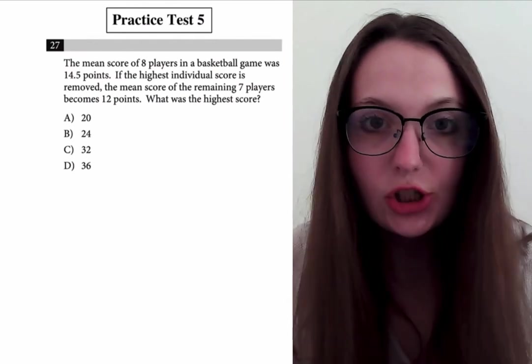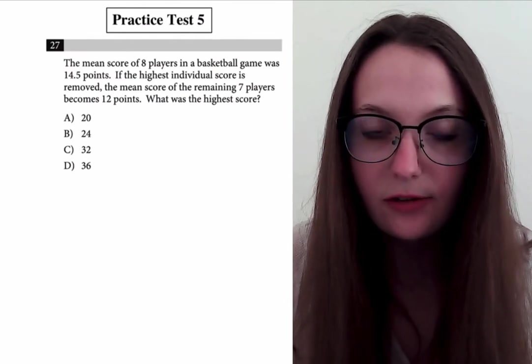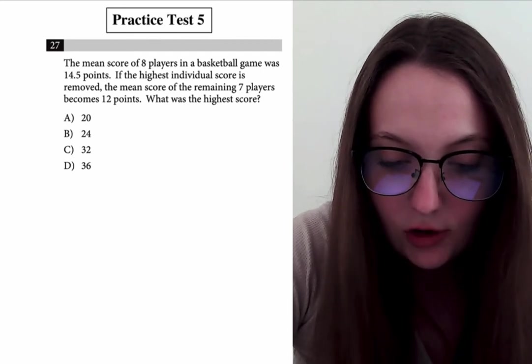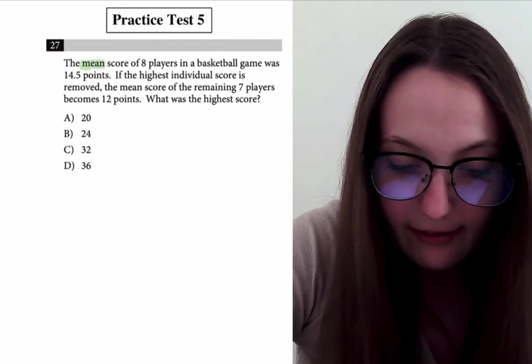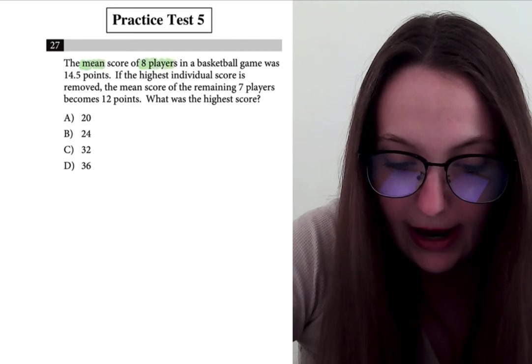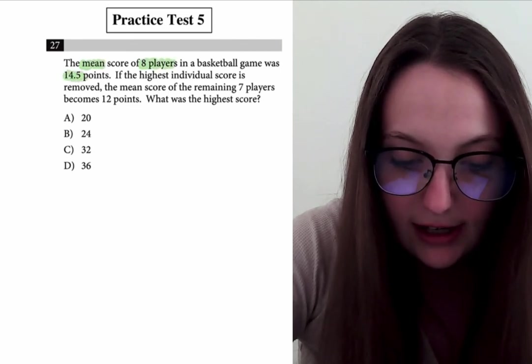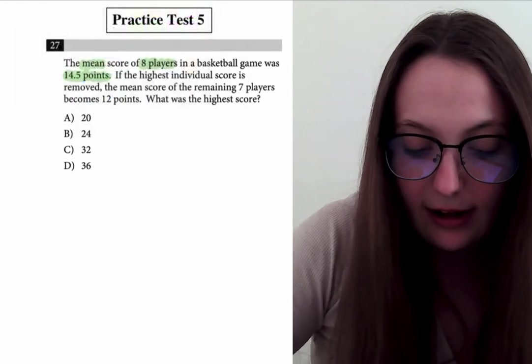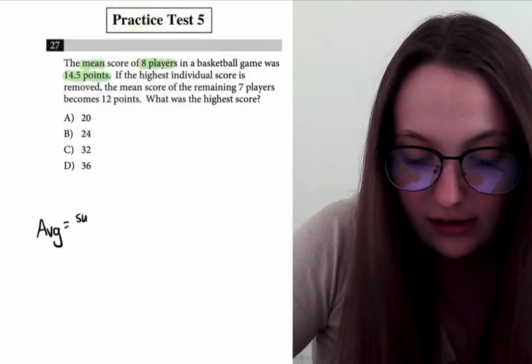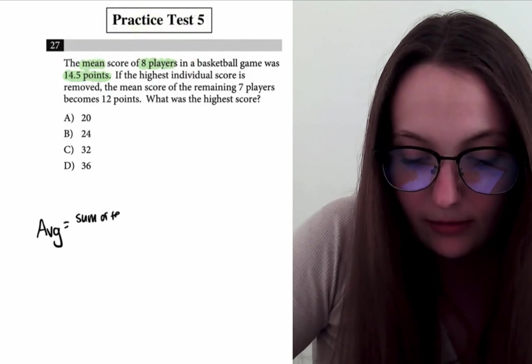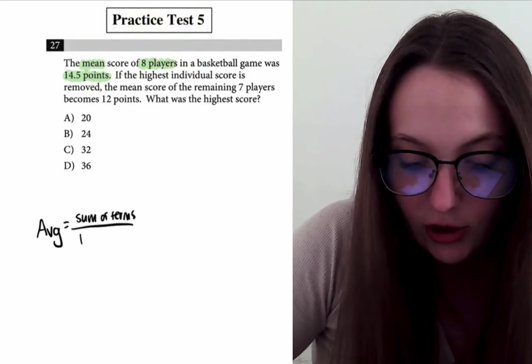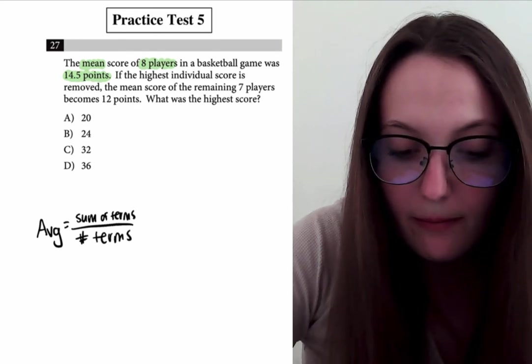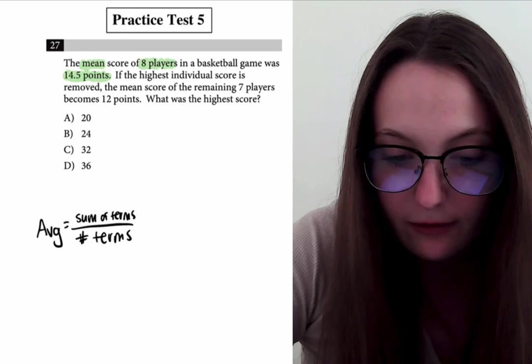So now let's check out question 27 from practice test five. They tell us that the mean score—mean again refers to the average—the average score of eight players in a basketball game was 14.5 points. So we know that the average is equal to the sum of the terms over the number of terms.